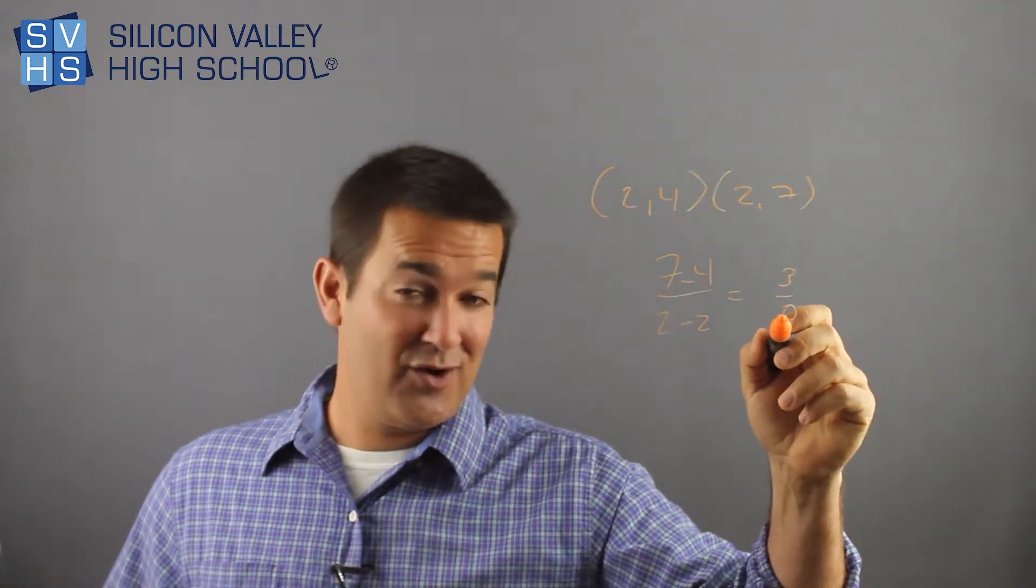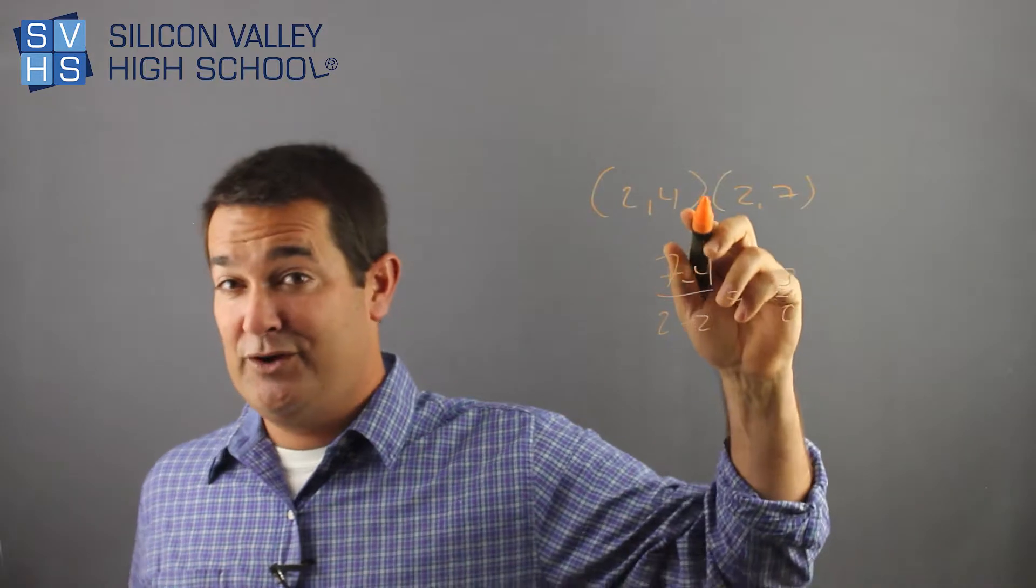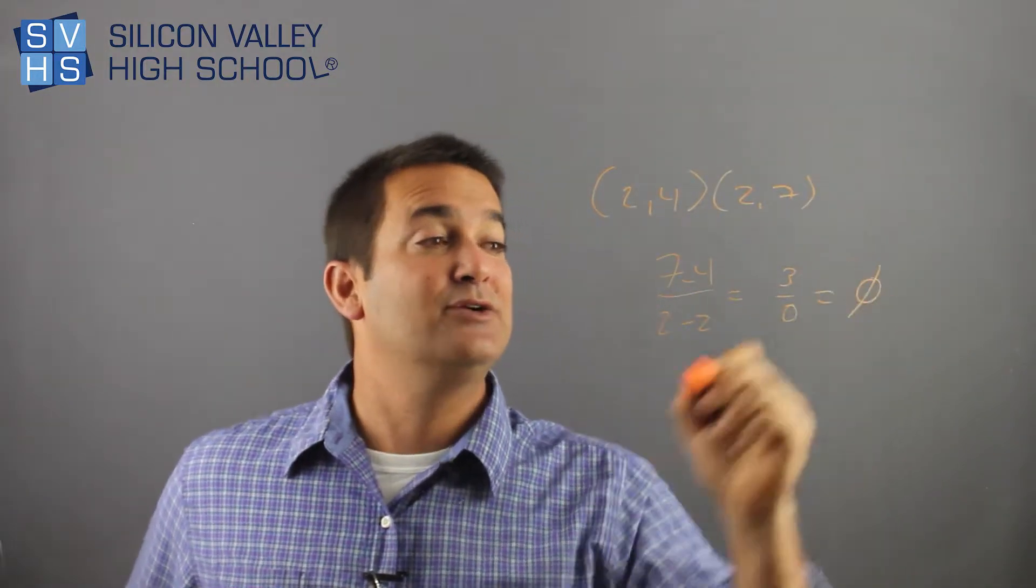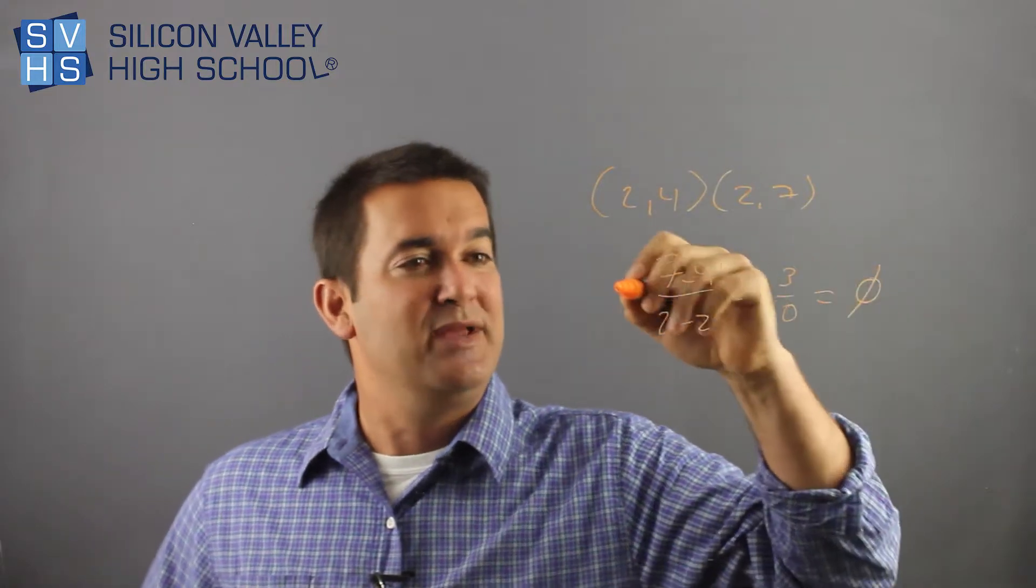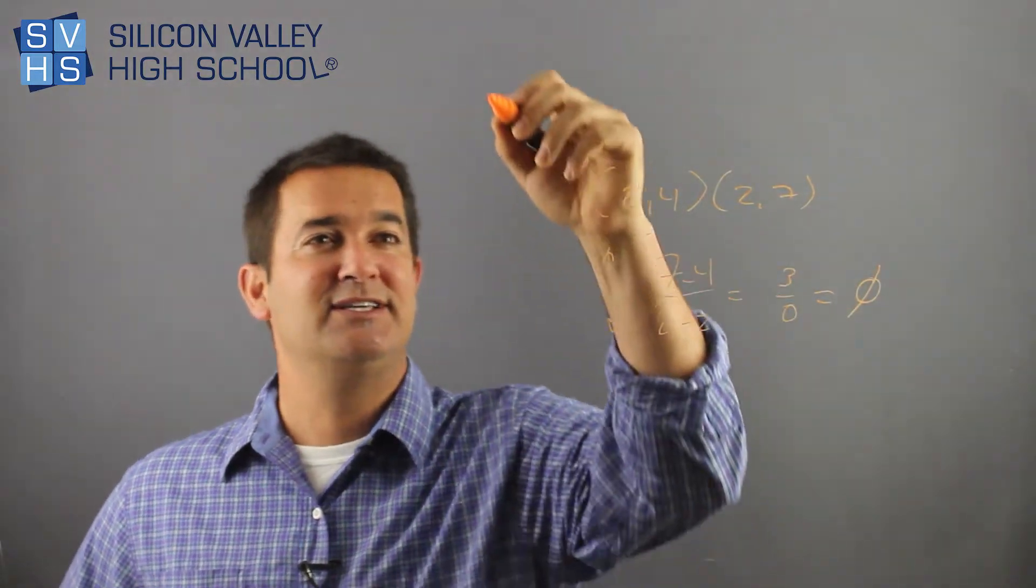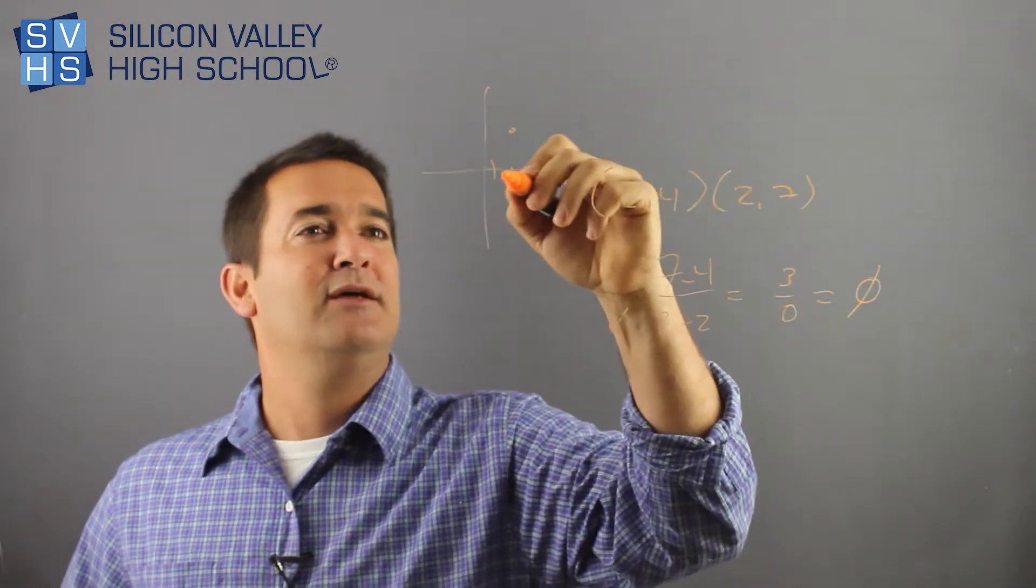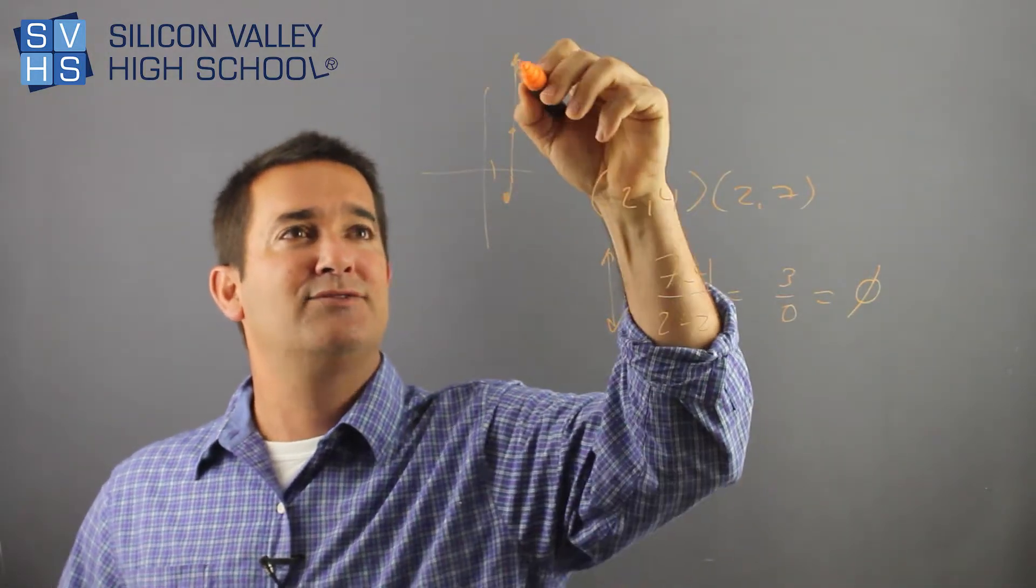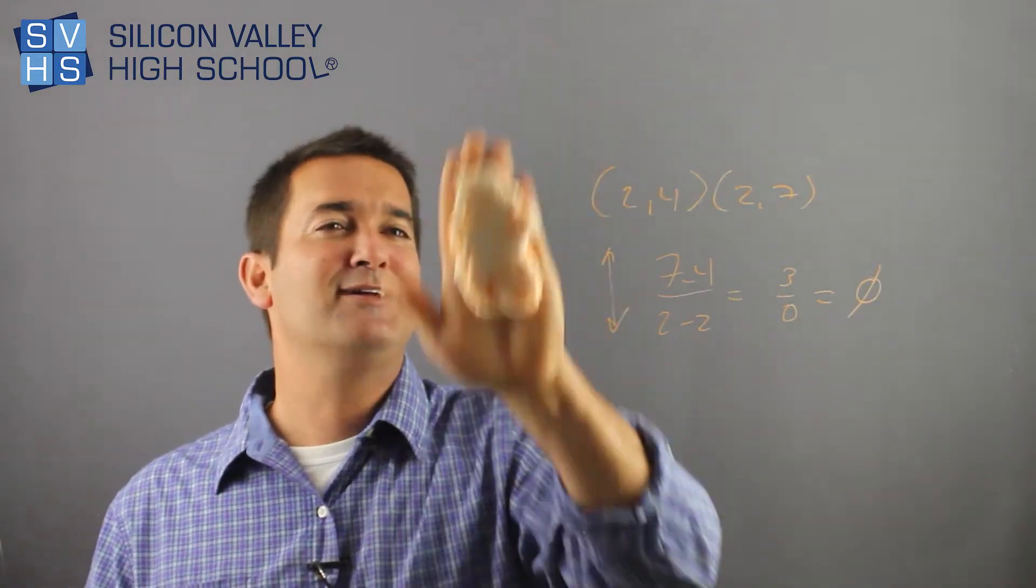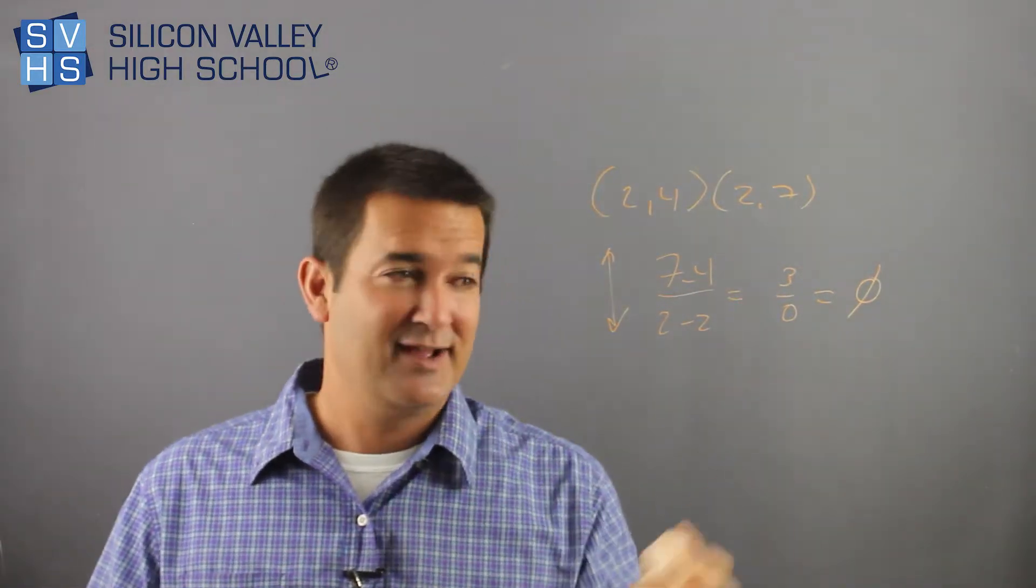You can never have a 0 in the denominator. You can have a 0 in the numerator all day long, but a 0 in the denominator is no solution, which again would be the graph of a vertical line. If you plotted these points, you'd see that. You go 2, 4, 2, 7, oh, he's right. It's a vertical line, and you don't need to graph it because you know that algebraically this came out to undefined.